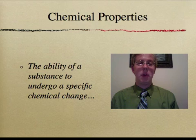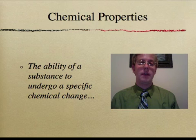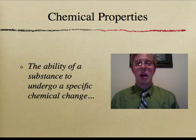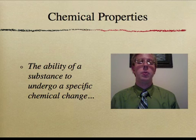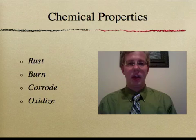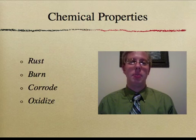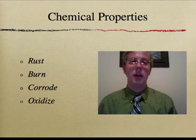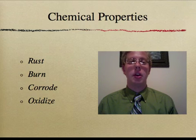There is a given set of physical properties for each element. Every element also has a given set of chemical properties that identify that individual element. A chemical property is the ability of a substance to undergo a specific chemical change — meaning you have to react the element itself with another element to determine its chemical properties. Chemical properties include the ability for an element or compound to rust, burn, corrode, or oxidize. Once the element undergoes one of these changes, you're not able to get the initial element back.